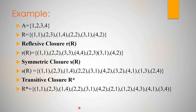Here is an example. The set A equals {1, 2, 3, 4} and the relation R equals {(1,1), (2,3), (1,4), (2,2), (3,1), (4,2)}. We will find the reflexive, symmetric, and transitive closures. This is not an equivalence relation.